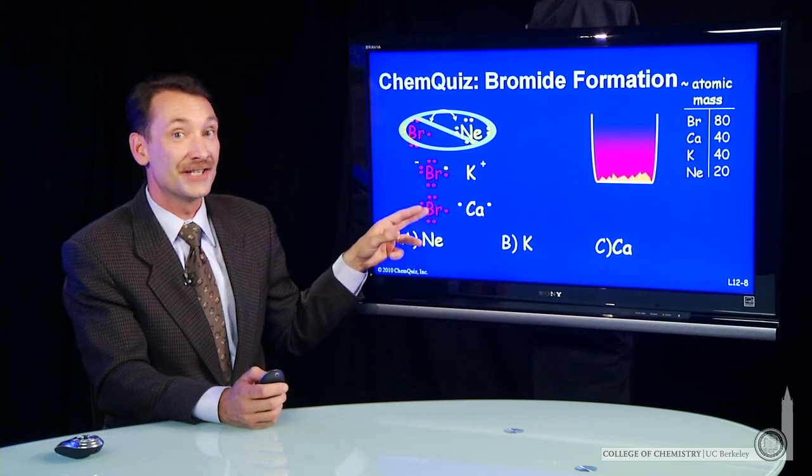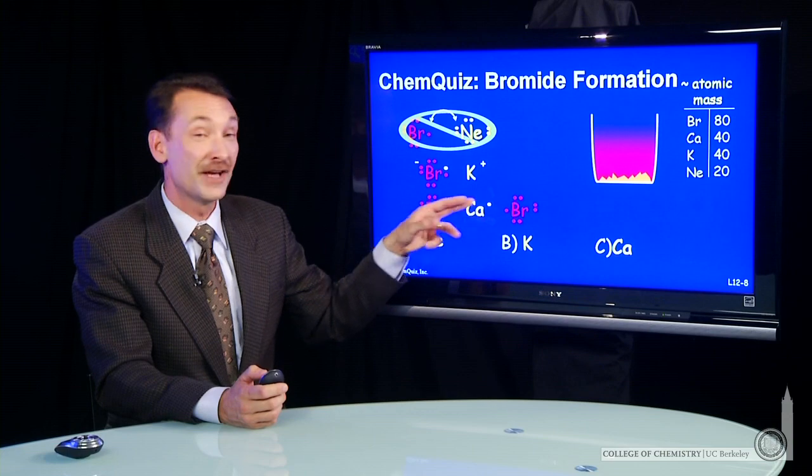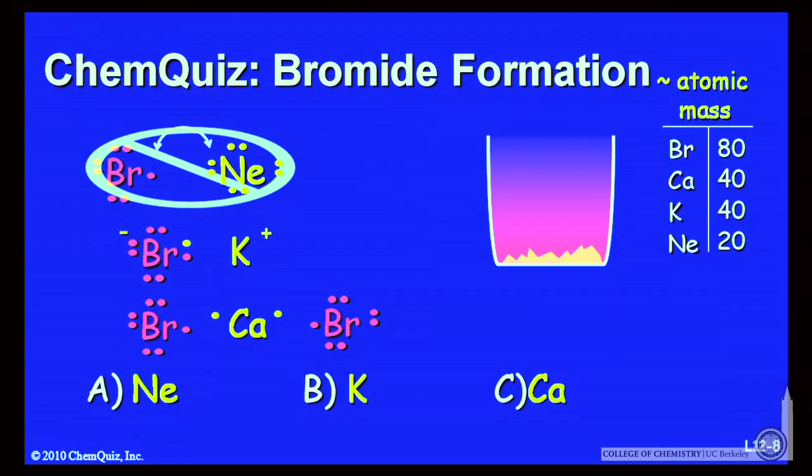Now, bromine and calcium. You have two valence electrons. So two bromines can react with calcium. Calcium can give up one of its electrons to one of the bromines and another electron to the other bromine.